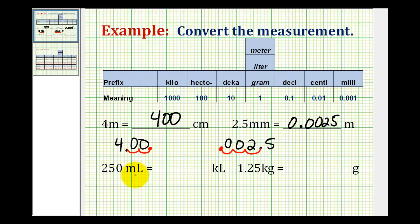We want to convert 250 milliliters to kililiters. So we're in this column here for milliliters, and we want to convert all the way to kililiters. So we can just take our decimal point and move it 1, 2, 3, 4, 5, 6 places to the left.